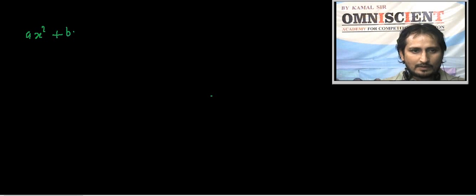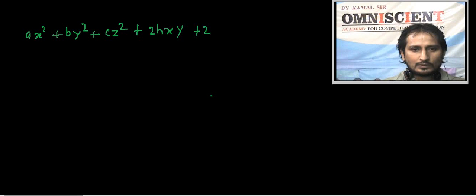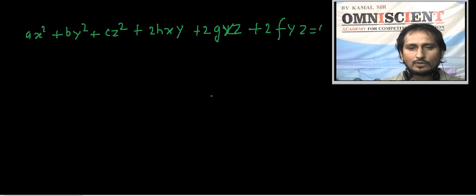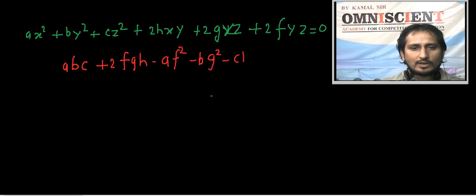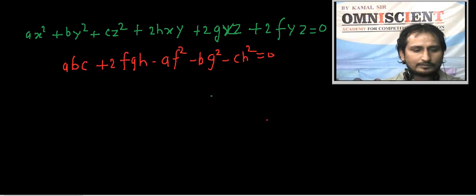ax² + by² + cz² + 2hxy + 2gzx + 2fyz = 0 यह दो planes को represent करता है passing through origin. इसके लिए condition है: abc + 2fgh - af² - bg² - ch² = 0. और अगर यह दो planes represent कर रहा है passing through origin,